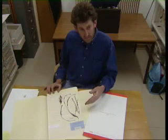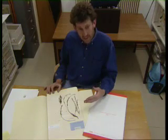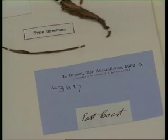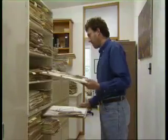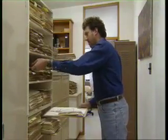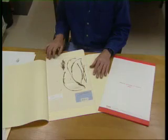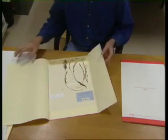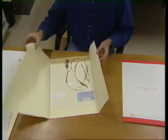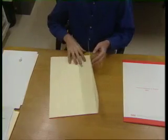This collection was made by Robert Brown in the early 1800s during a collecting trip with Matthew Flinders and Ferdinand Barr on the Investigator. Specimens twice this age exist, and so herbarium specimens form a valuable cultural and scientific resource. This specimen is on loan from the British Museum for a current research project. Type specimens receive extra special care.